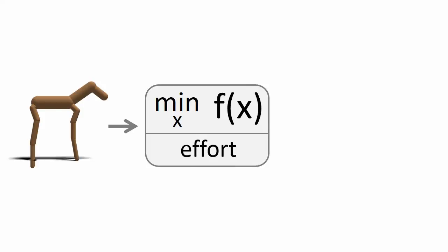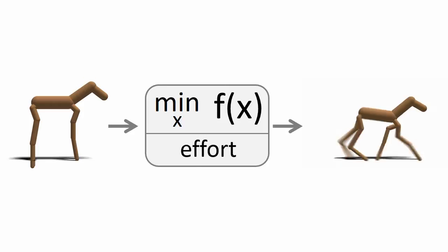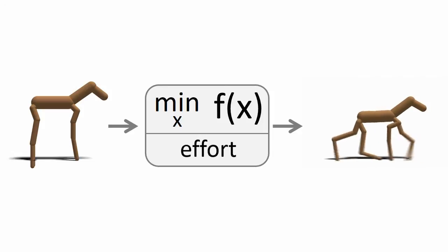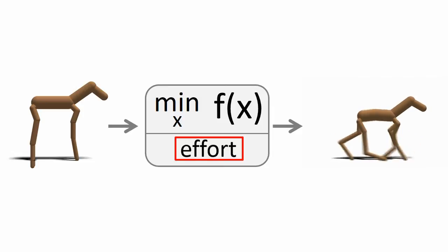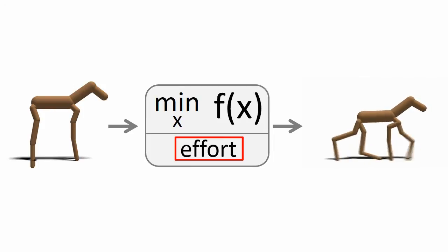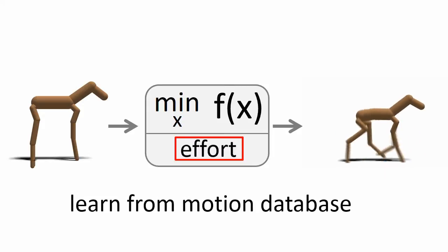Given what an animal is shaped like, we search for the particular way it can walk using minimal effort, and that gives us a walking animation. This works relatively well in practice, but when you dig into the details, how you calculate this effort term matters and it's not easy to get right. For example, I tried to do this by hand and got something like the animation on the right, where the gazelle's back legs are kind of wonky. So our approach is essentially going to use the motion database to learn a better idea of what this effort should be.